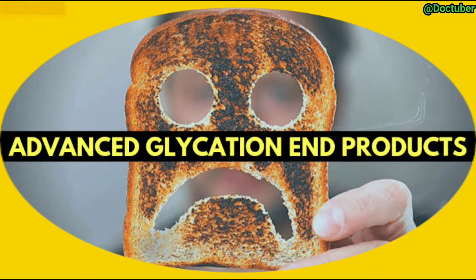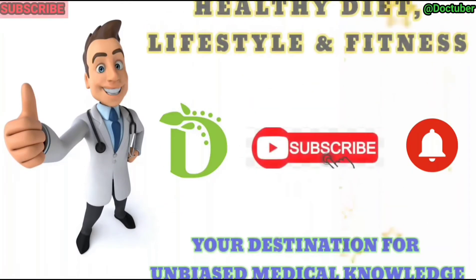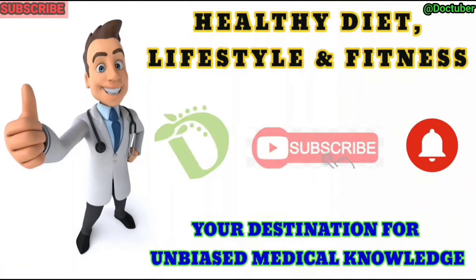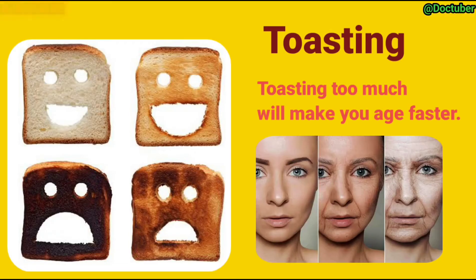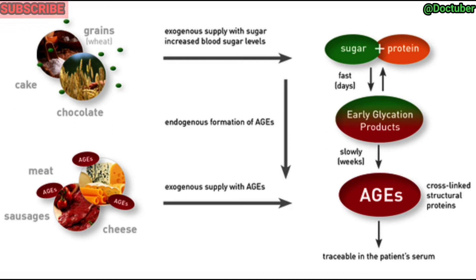We will answer all these questions — stay tuned to our channel. We all love bread toasts, but too much toasting will make you age faster. A chemical reaction takes place during cooking at high heat that is known as the Maillard reaction. Here, sugars and proteins of the food react to form Advanced Glycation End Products (AGEs), which give flavors to the food.